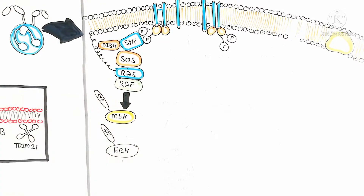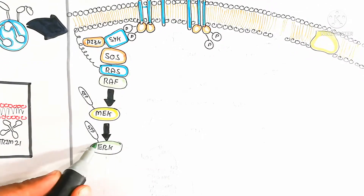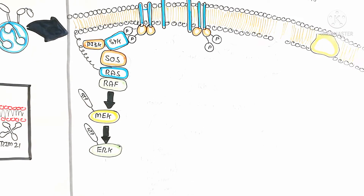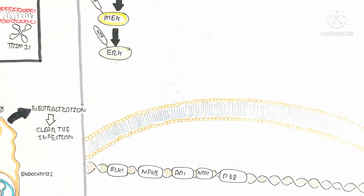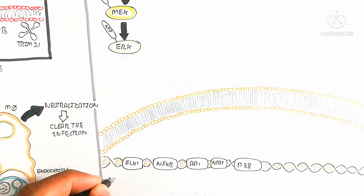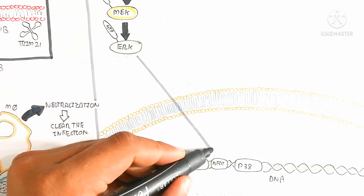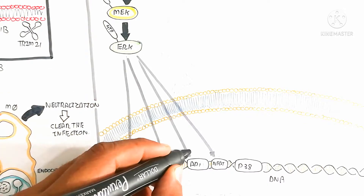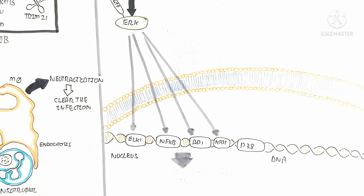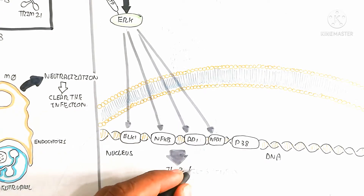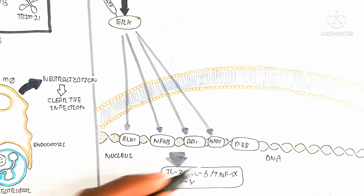RAF activates MEK via GTP activation. Then ERK (extracellular signal-regulated kinase) is activated. Through this pathway, four types of genes are activated by phosphorylation: ELK1, NF-κB, AP1, and STAT/P38. This results in production of interleukin-2, interleukin-6, tumor necrosis factor alpha, and interferon gamma — all used for recruitment of macrophages.